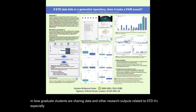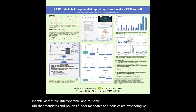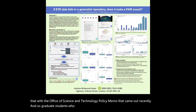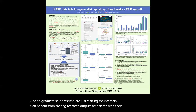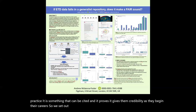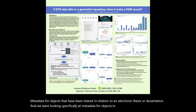It's especially important that researchers in all disciplines understand how to share research outputs in a FAIR way: findable, accessible, interoperable, and reusable. Publisher mandates and policies, funder mandates and policies are expanding — we just saw that with the Office of Science and Technology policy memo that came out recently. Graduate students who are just starting their careers can benefit from sharing research outputs associated with their thesis and dissertation. It's good practice, it is something that can be cited, and it gives them credibility as they begin their careers.